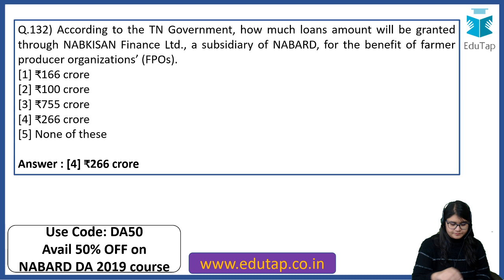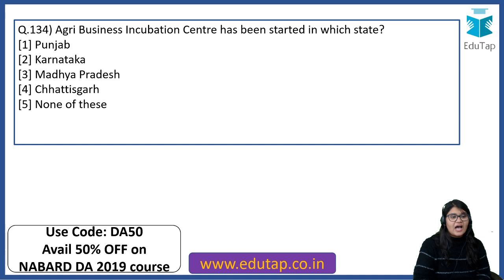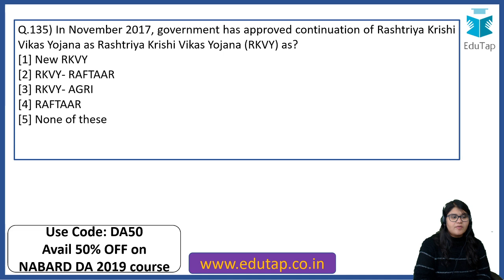As per the Botanical Survey of India Report 2019, the highest number of orchid species is recorded from Andhra Pradesh. Agri Business Incubation Centre has been started in Chhattisgarh. In November 2017, the government approved continuation of Rashtriya Krishi Vikas Yojana as Rashtriya Krishi Vikas Yojana — Raftar. So the new name given to the scheme is RKVY Raftar.